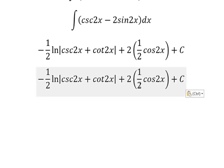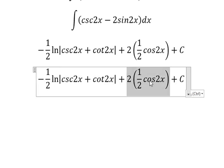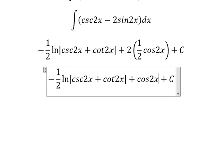The final answer is 1 over 2 ln absolute value of cosecant 2x plus cotangent 2x, plus cosine 2x. That is the end, thank you for watching.